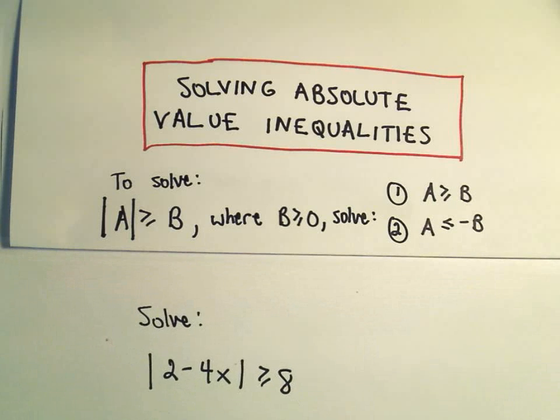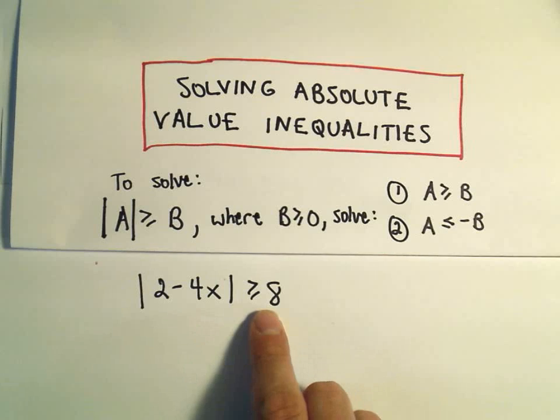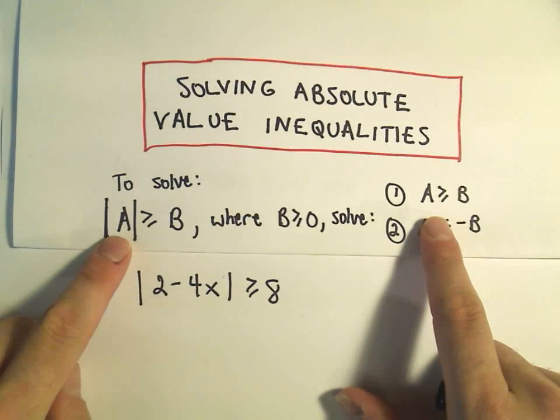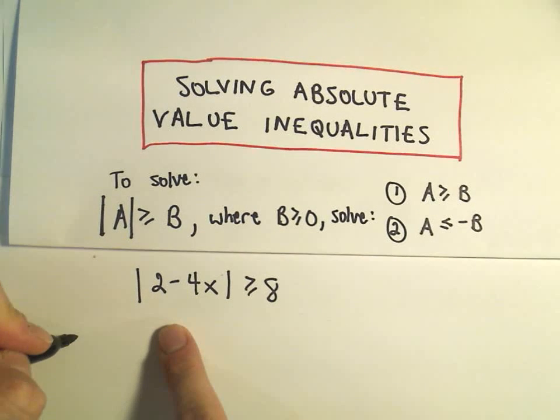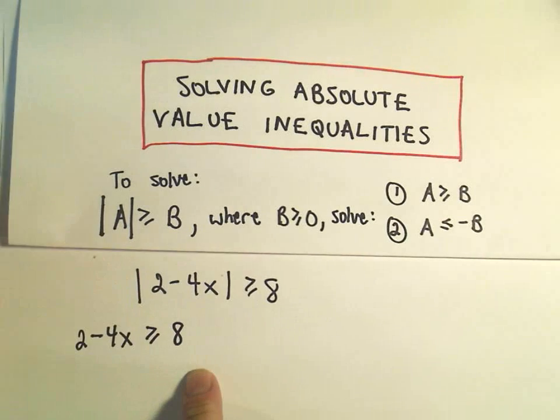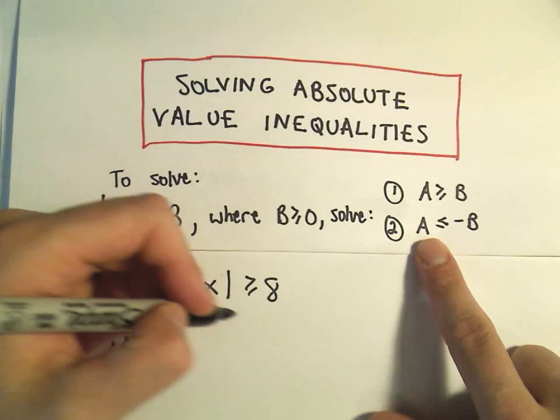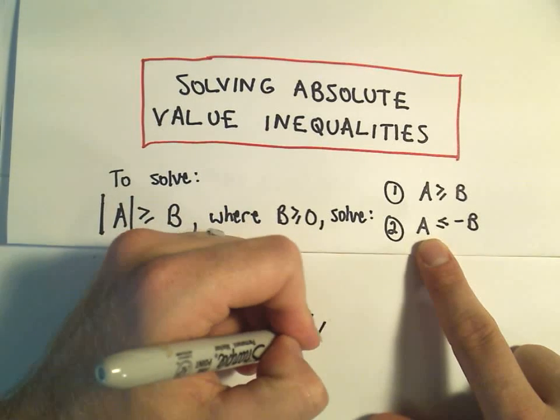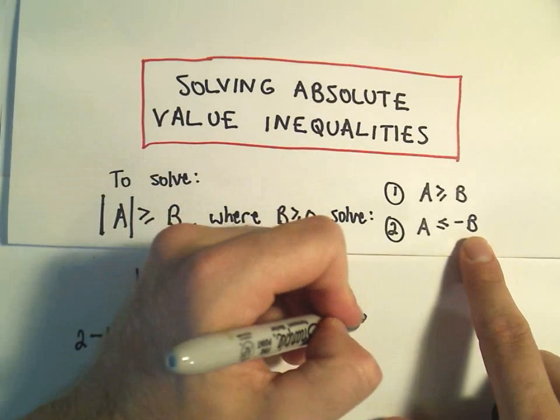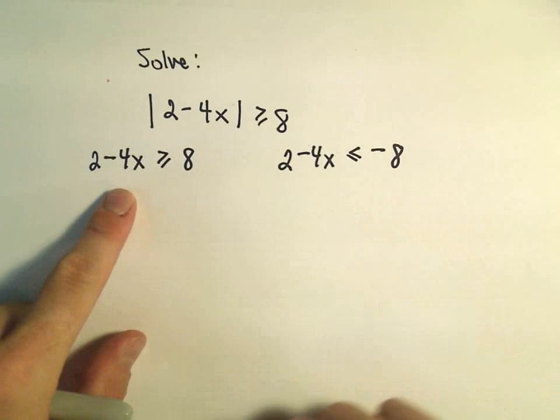So the first problem here I'm going to do is the absolute value of the quantity 2 minus 4x greater than or equal to 8. According to this, what you do is just remove the parenthesis or the absolute value, make that greater than or equal to 8. That's the first equation. And the other, just remove the absolute value and make that less than or equal to the negative of the number that you started with. Now you simply have your two little inequalities that you have to solve.